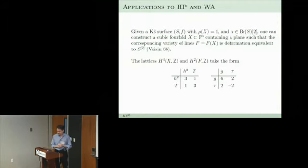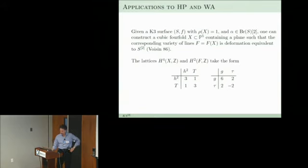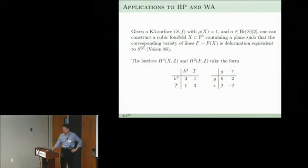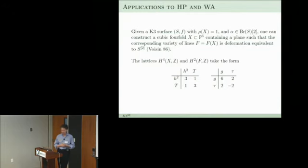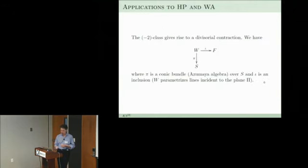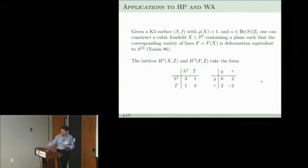The geometry of the cubic fourfold and the interaction with the variety of lines led us to the original conjecture with minus 5/2, and it can also be used for computing the Brauer-unobstructed subset of the adeles. Here is a construction: start with a polarized K3 of Picard rank 1, pick some element of the Brauer group, and there is a construction of a cubic fourfold whose variety of lines is deformation equivalent to the Hilbert scheme Hilb^2(S) of this particular K3 surface.